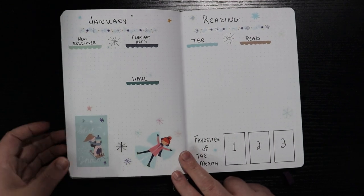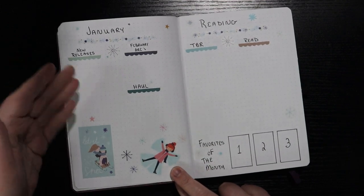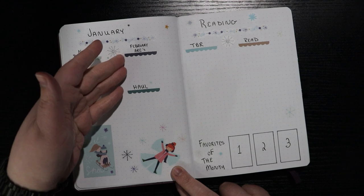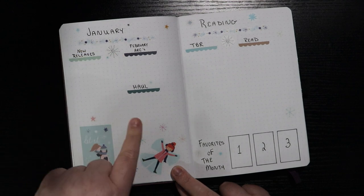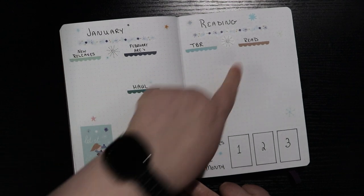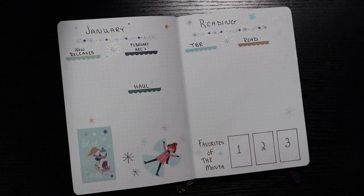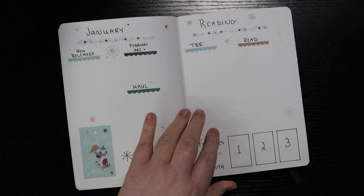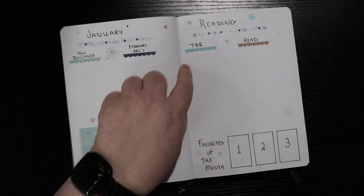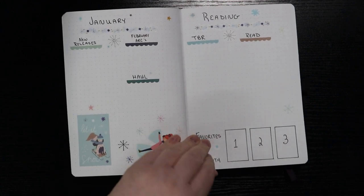And then have my January reading. I have a spot for new releases for any arcs for February that I need to read. My book haul, my TBR, any books read, and then my favorites of the month. I do have some reading challenges that I need to work in as well, but I'll do that in my TBR and try to figure that fun stuff out.